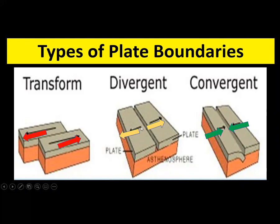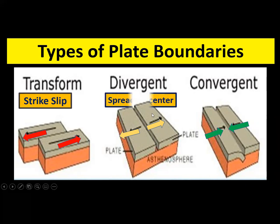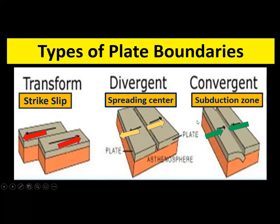Remember the type of movement exhibited by each boundary. Other names for transform include strike-slip, like the San Andreas fault. Divergent is also called a spreading center, like in the Atlantic Ocean. Convergent is also known as a subduction zone. When you hear strike-slip, that results from a transform boundary; spreading center from a divergent boundary; and subduction zone from a convergent boundary.